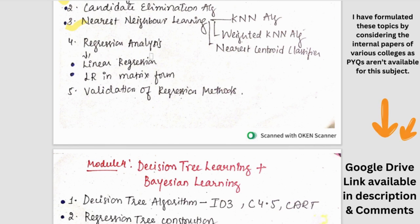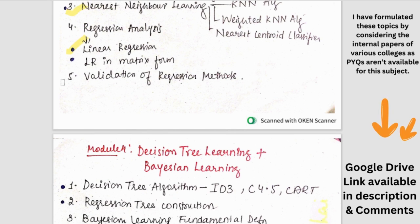And then in linear regression analysis - what is regression analysis and then types of regression analysis. And we have linear regression and linear regression problems. So that could be asked. LR linear regression in matrix forms is not that important. Then we have validation of regression methods. This is a theory topic, even this could be asked.